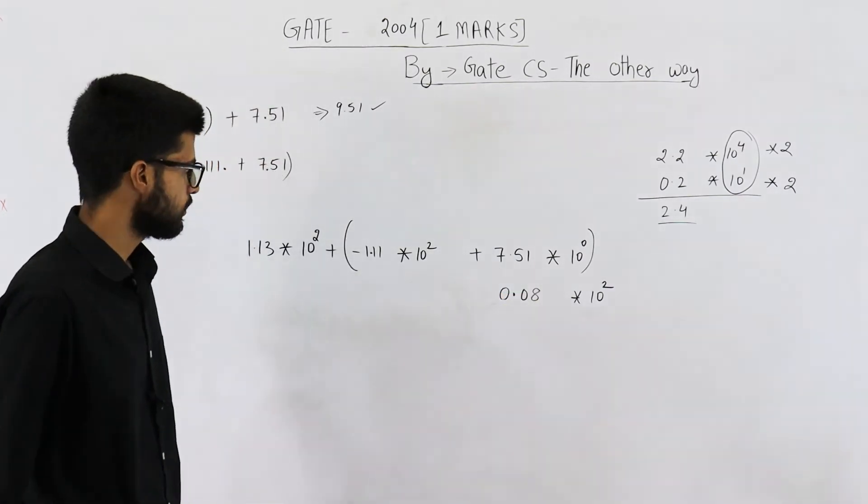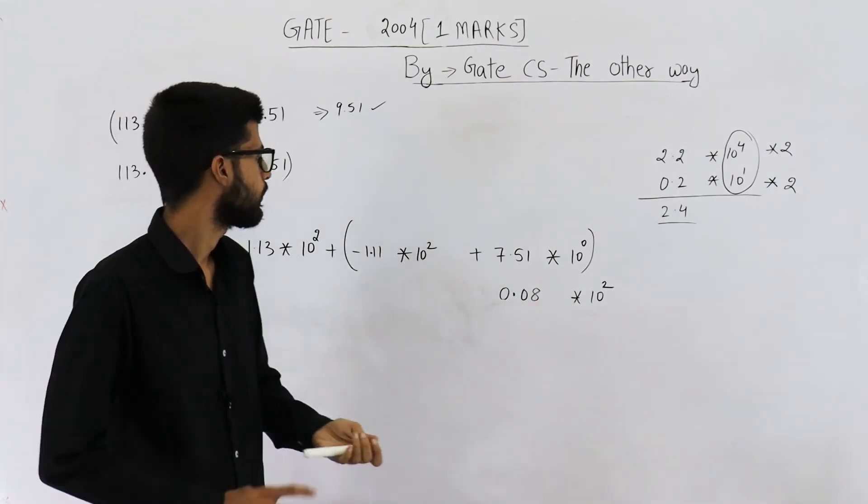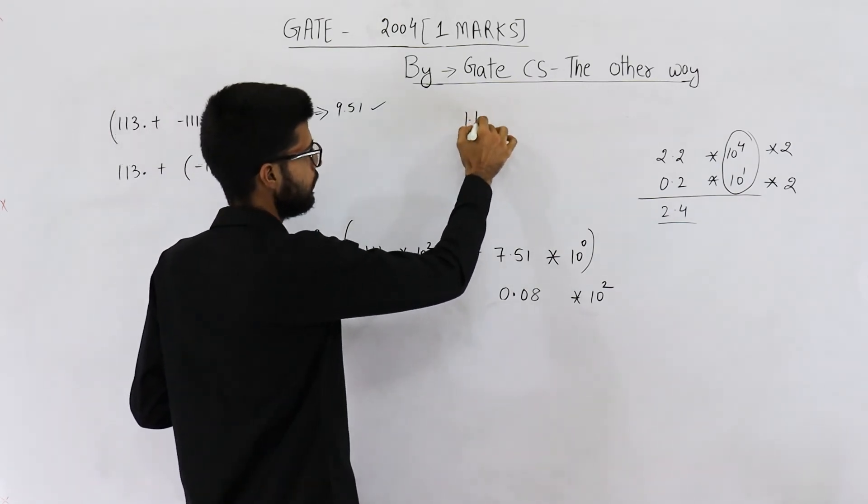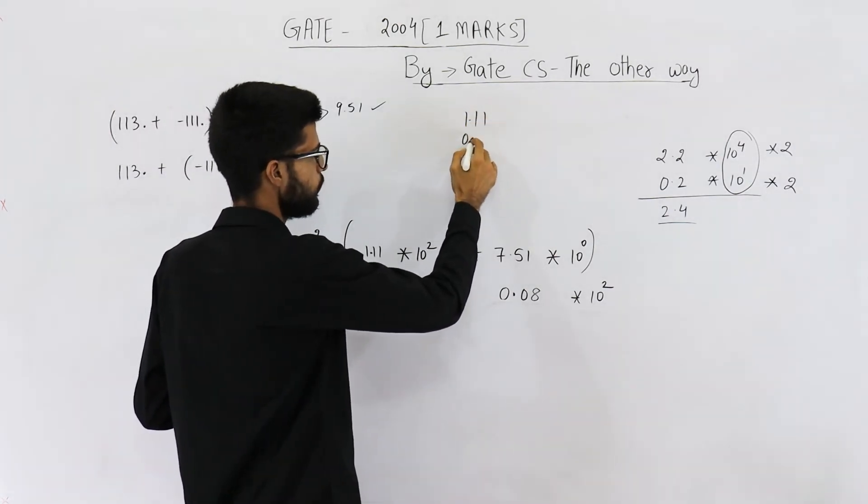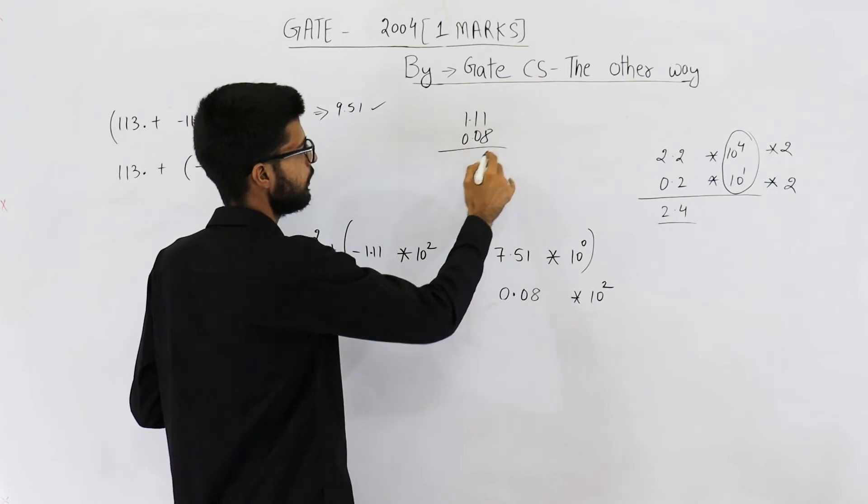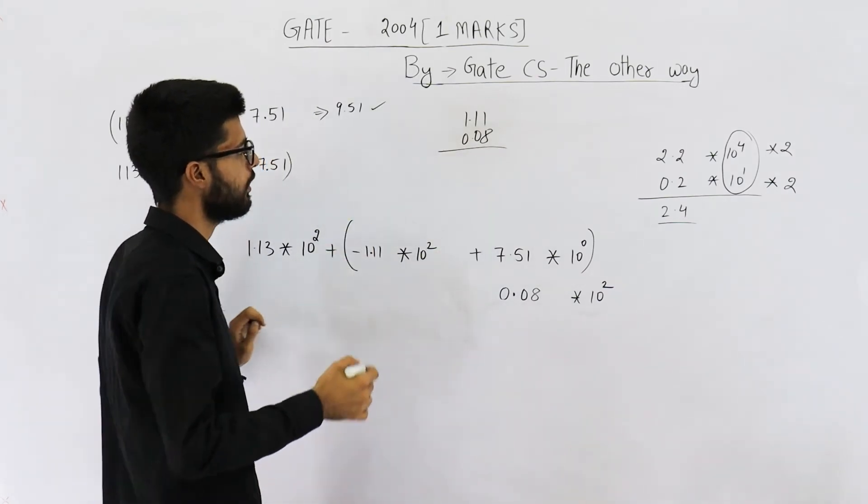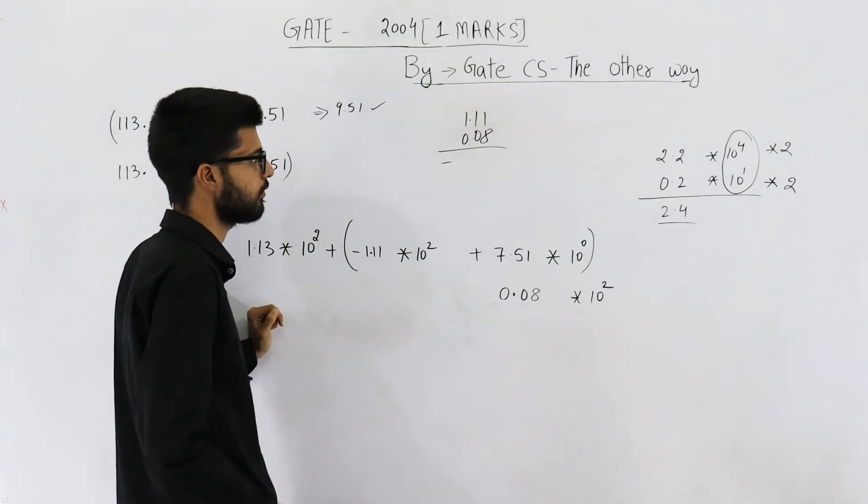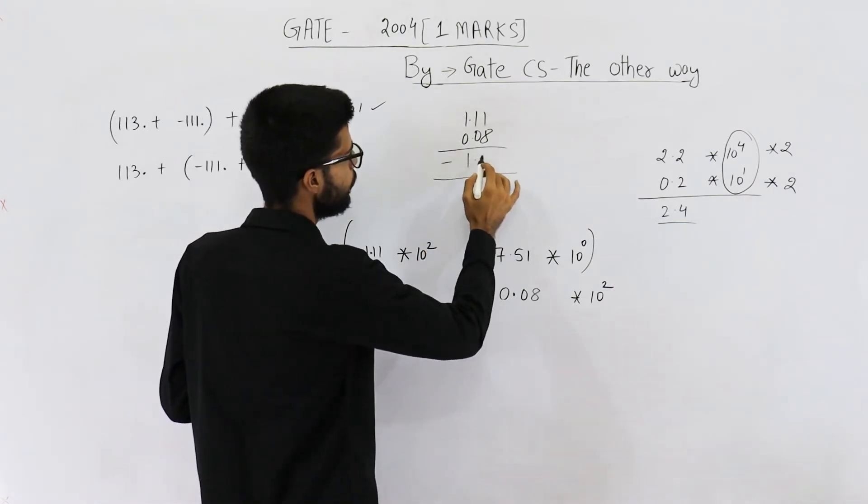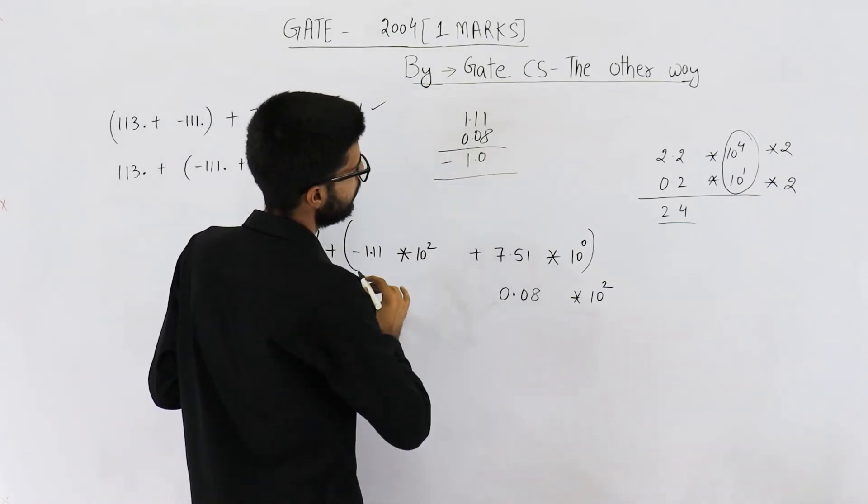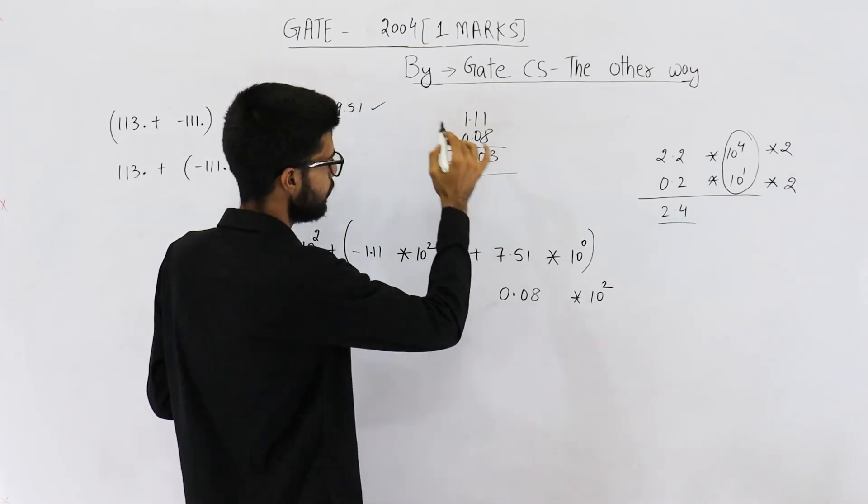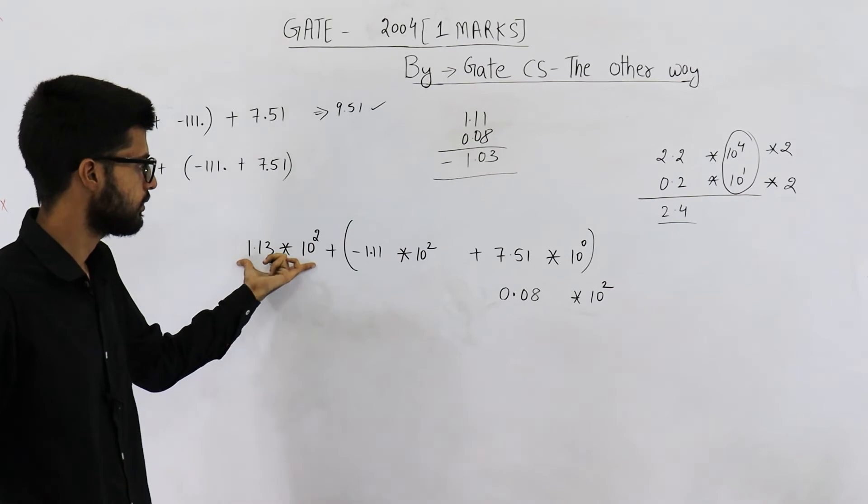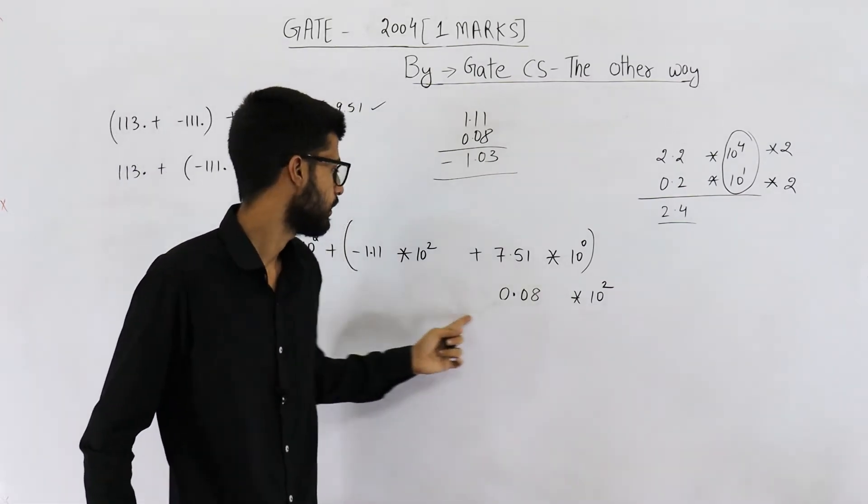Now, we just need to subtract these two. So, the larger one is this. So, it will be 1.11 - 0.08. And the result will have a negative sign because the bigger number is negative. So, it is going to be 1.0, and it is 1.03.